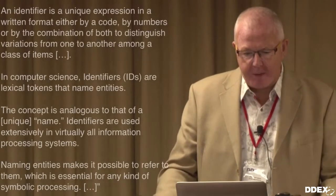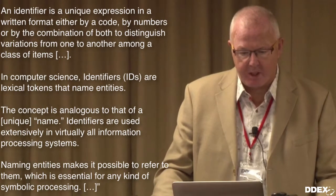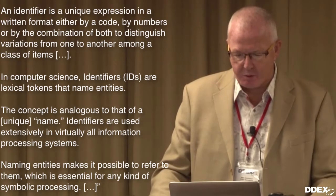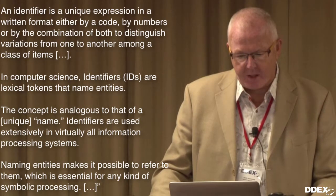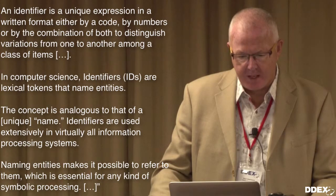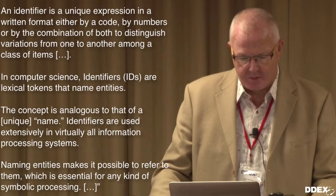So I thought I'd just spend a few minutes describing a sort of a professor's view of what identifiers should do. And although the source of this is Wikipedia, it actually does make some sense. An identifier is a unique expression in a written format either by a code, by numbers, or by the combination of both to distinguish variations from one to another among a class of items. In computer science, identifiers are lexical tokens that name entities — the concept is analogous to that of a unique name. Identifiers are used extensively in virtually all information processing systems. Naming entities makes it possible to refer to them, which is essential for any kind of symbolic processing.